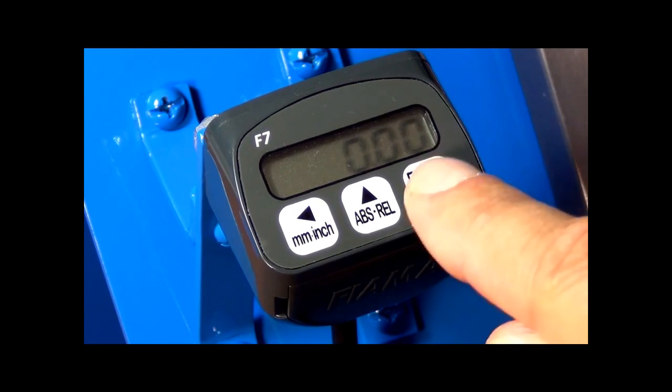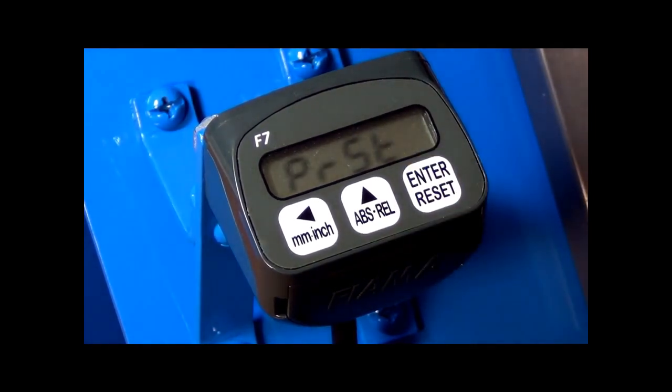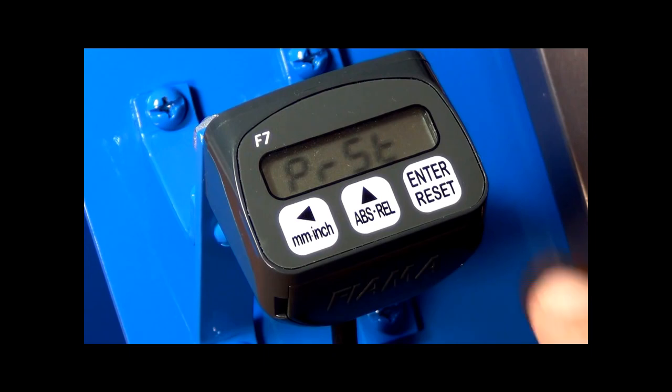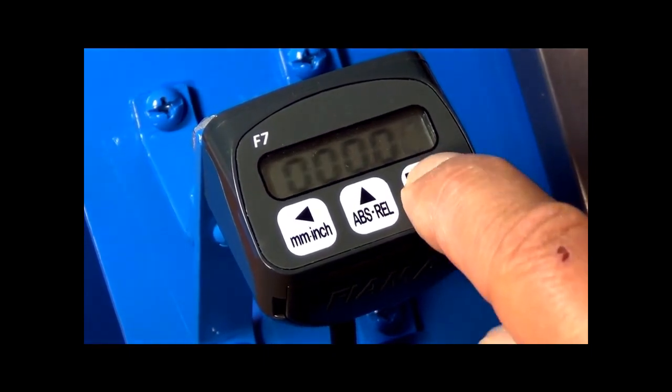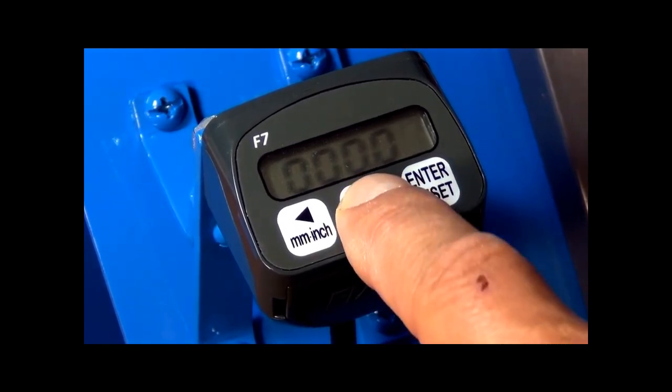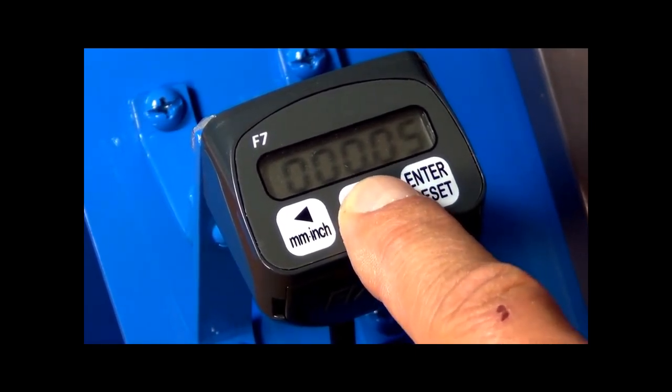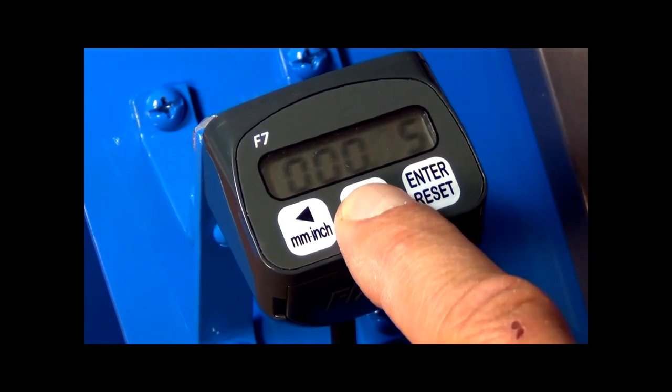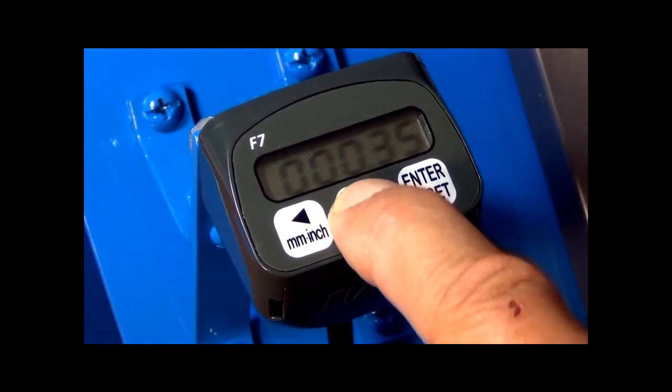Depress the RESET button. PRST, or preset value, will appear on the display. Depress the ENTER button twice, and our display can now be programmed to our value of 32.65 mm, in the same manner as we enter all our values in the programming mode.